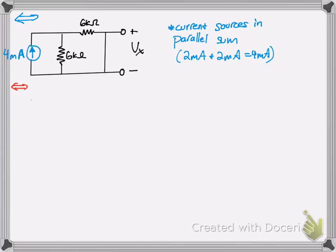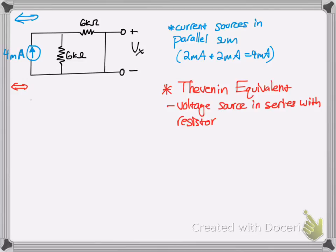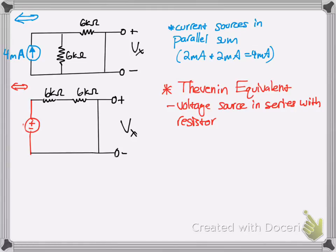Next, we're going to try a Thevenin equivalent exchange here. What Thevenin equivalent exchanges do is that they take your current source, and you make it a voltage source that is in series with the resistor. That 6 that was previously in parallel is now in series at the top there. But we've got to figure out what the voltage is. By Ohm's Law, V equals IR. We got 4 milliamps times the 6 kiloohm resistor, which gives you 24 volts.